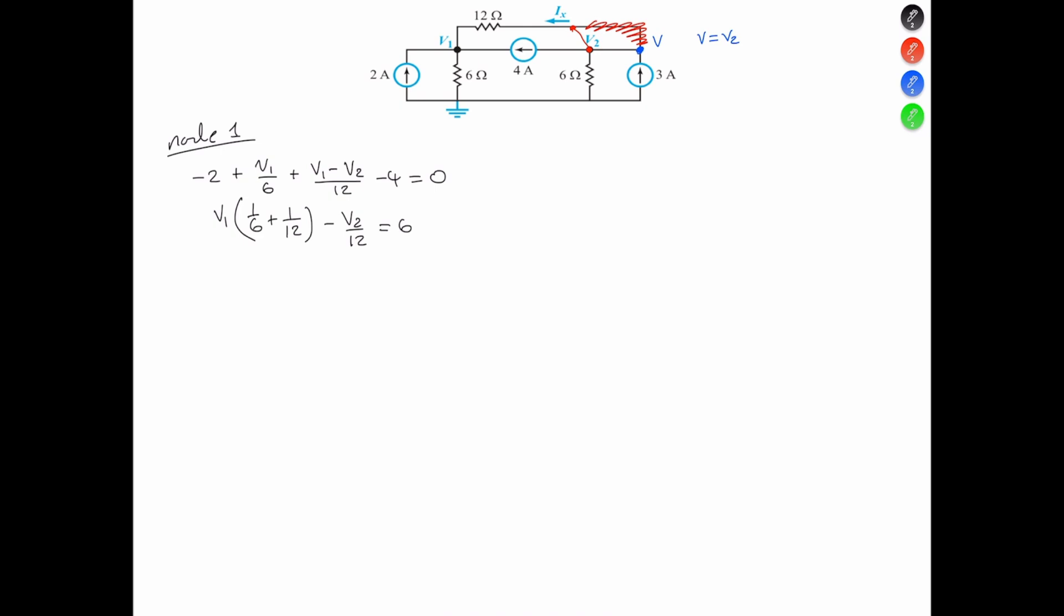Simplifying that, we got 3V1. And this is because we multiply through by 12. So, 3V1 minus V2. Multiply by 12, so 6 times 12 is 72. Had to check on my calculator again. And that's node equation 1.